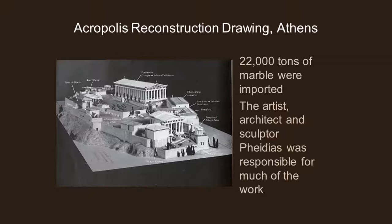From this reconstruction drawing you can see all the sculpture that would have been in each of the different buildings. Here's the Temple of Athena Nike, and of course the Parthenon up here, and we'll get to some of the sculptures on that. As we saw in the archaic sculpture, sculptures were made individually and then put up into the metopes or the pediment or wherever they were going to go on any given building.